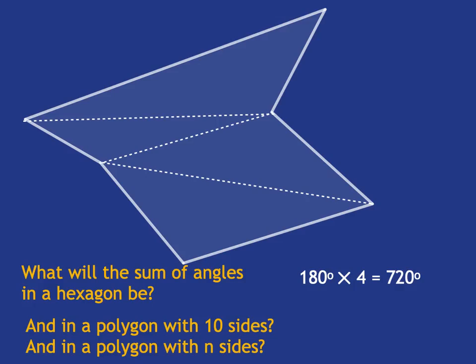A pentagon, five sides, is made up of three triangles. A hexagon, six sides, is made up of four triangles. And so a polygon with ten sides will be made up of eight triangles.